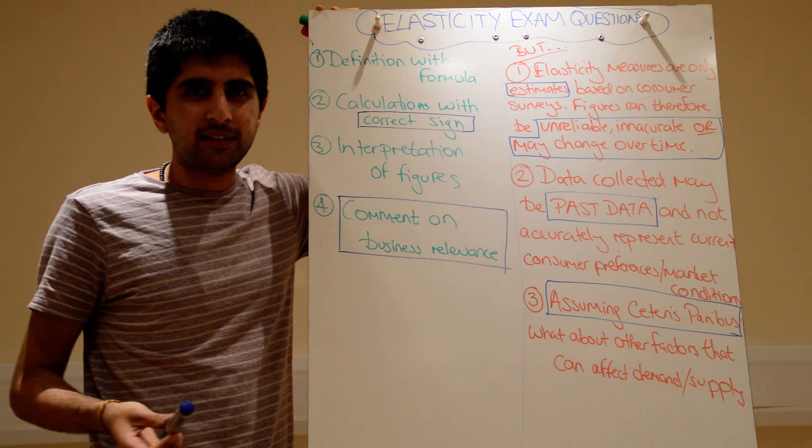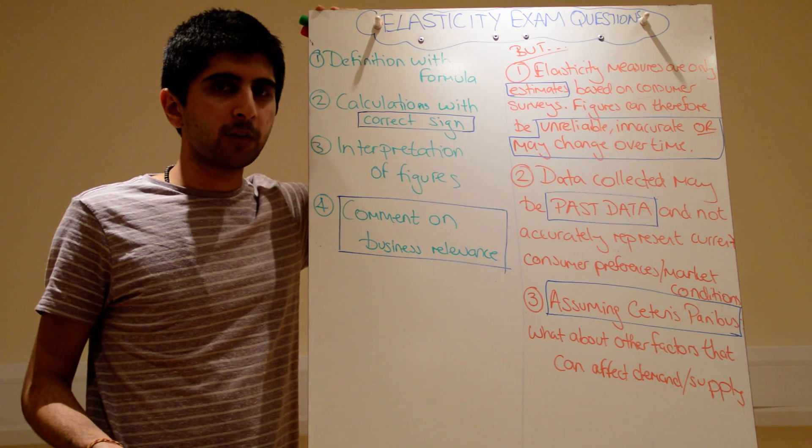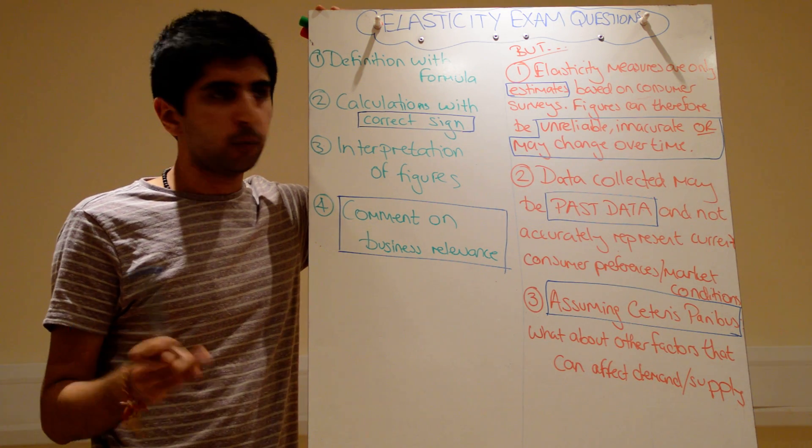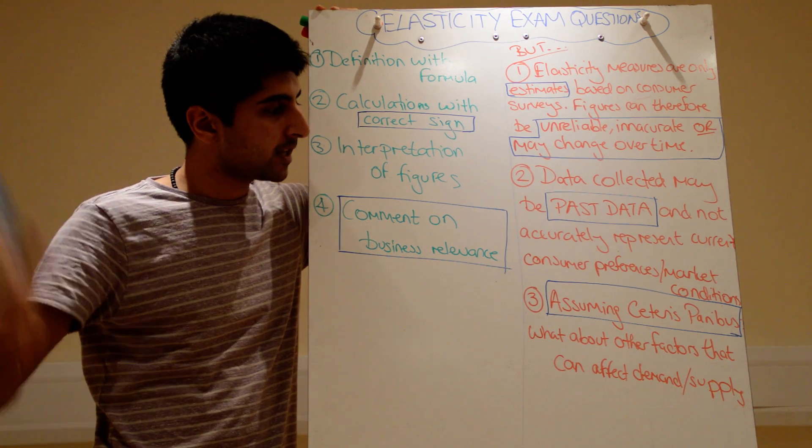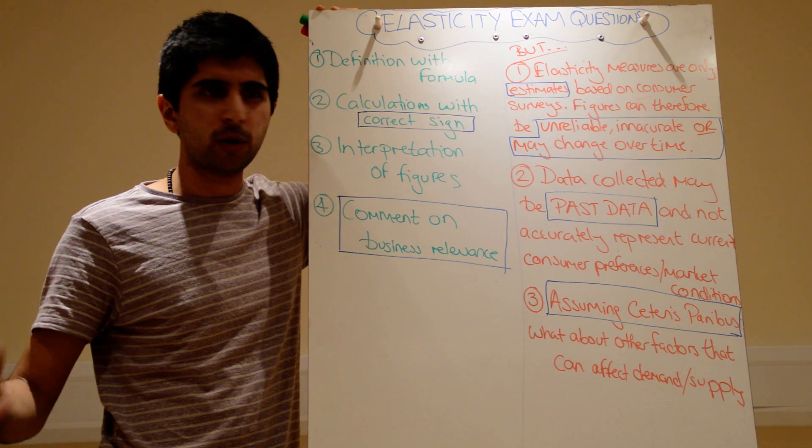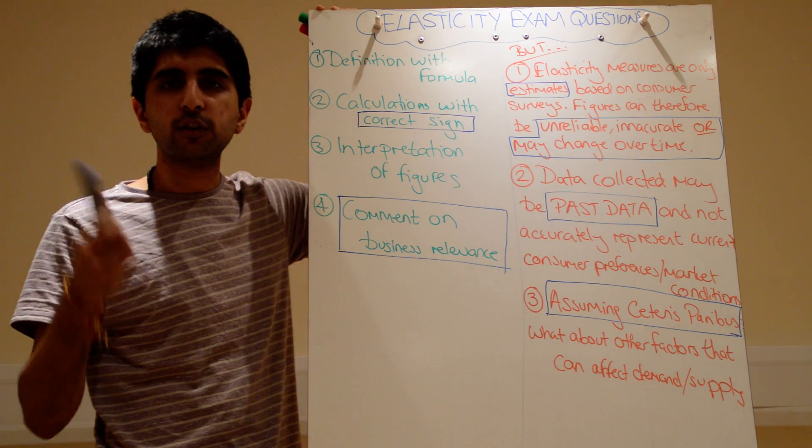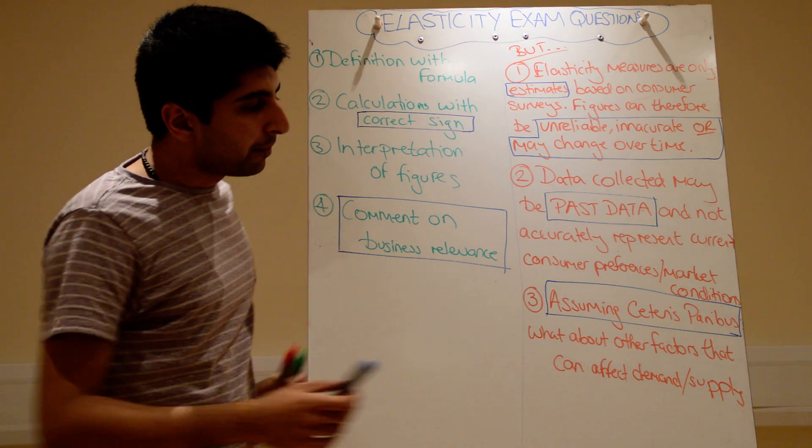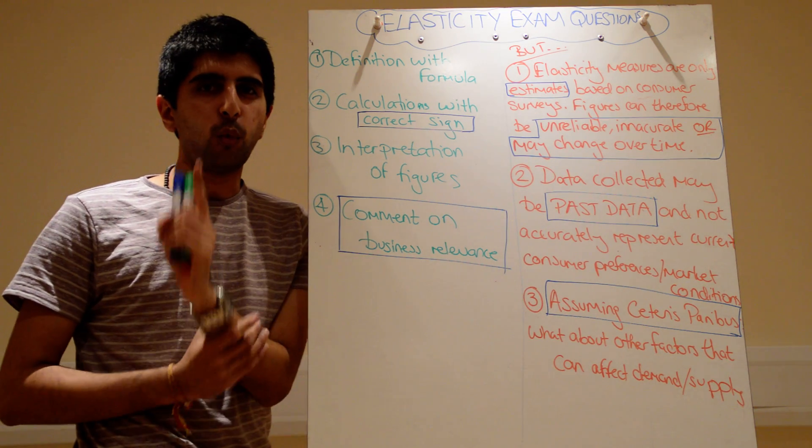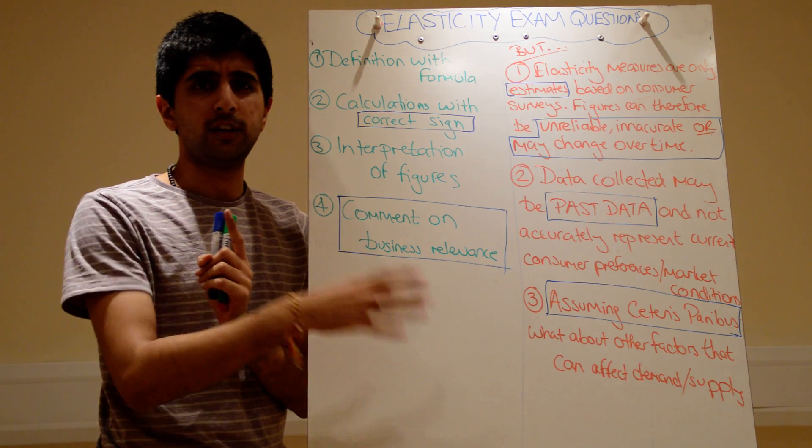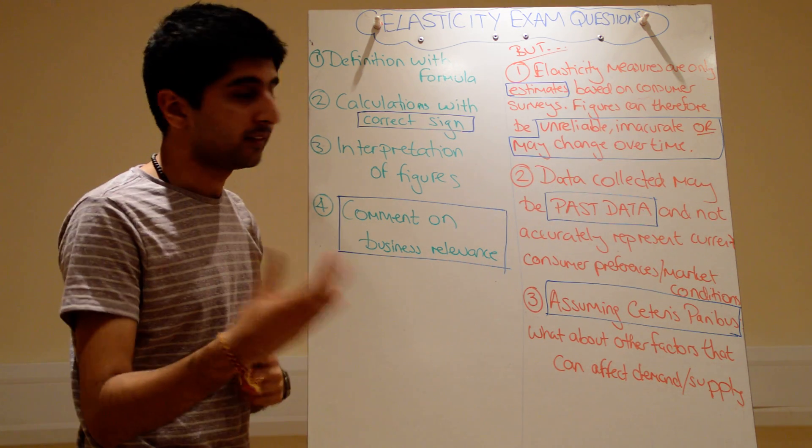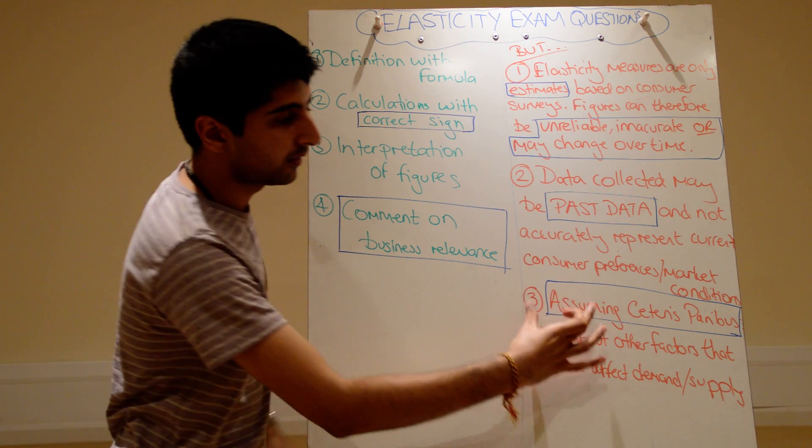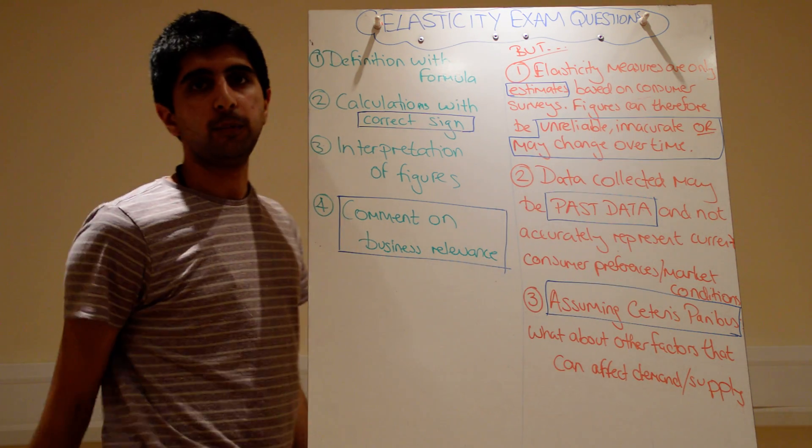Finally, when we measure elasticities, we're assuming ceteris paribus, aren't we? We're isolating one factor that will affect the demand for a good. So, for PED, just the price. For PES, just the price. What about all the other factors that can change supply and demand? For XED, we're just looking at the price of one good. What about all the other factors that can affect demand for a good? And for YED, we're just looking at income. What about all the other factors that can affect demand outside of income? So, for a business, how relevant is elasticity? You're only isolating one factor. In truth, surely loads and loads of different factors will affect quantity demanded, quantity supplied for a business's product. In which case, the business can't rely too heavily on elasticity figures alone because of this assumption of ceteris paribus. What about other factors too?